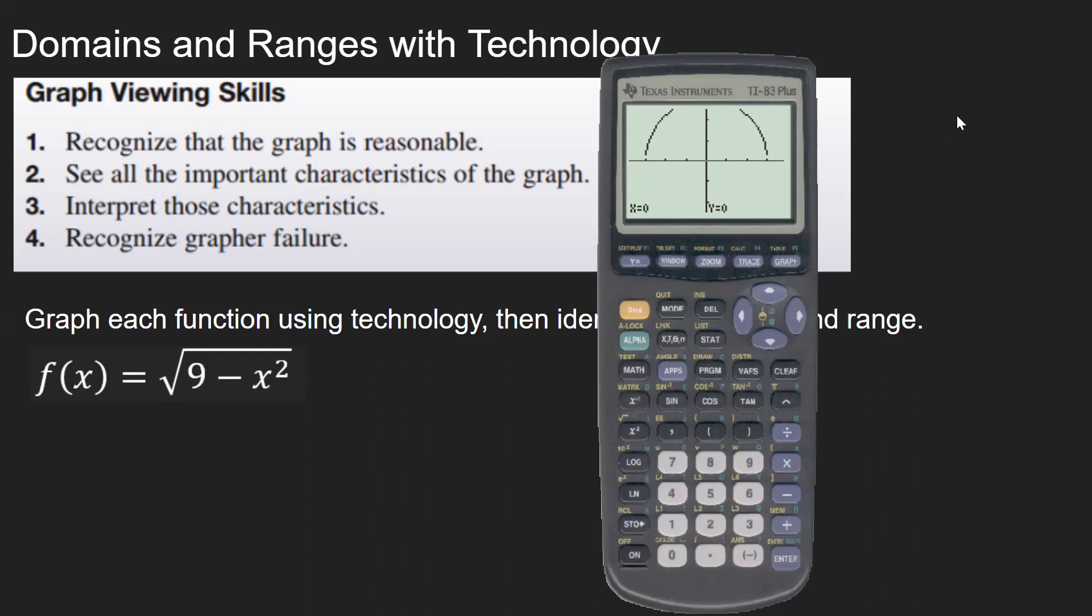OK, so here the domain is going to be negative three to three. And the range is going to be zero to three, because the x values that work for this function start at negative three and they go to positive three. If you get anything larger than three or smaller than negative three, when you square and subtract from nine, you'd end up with a negative in the radical.